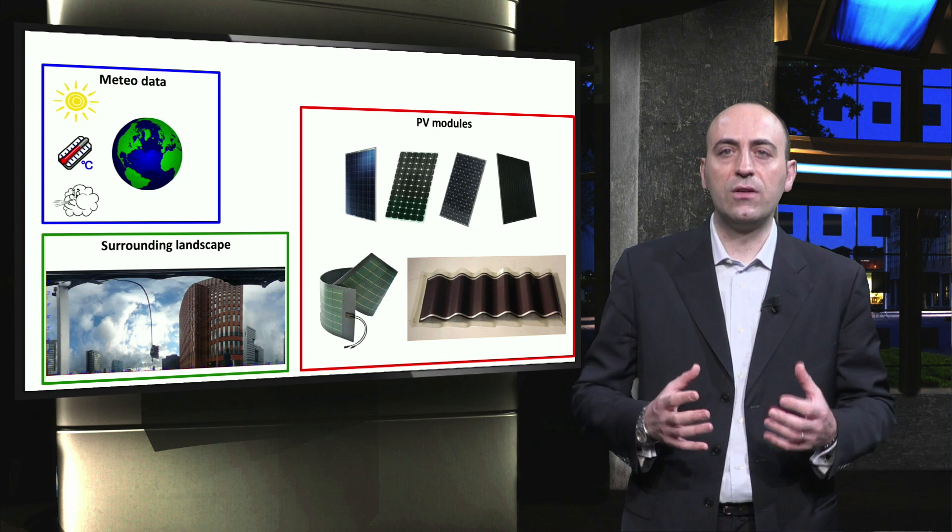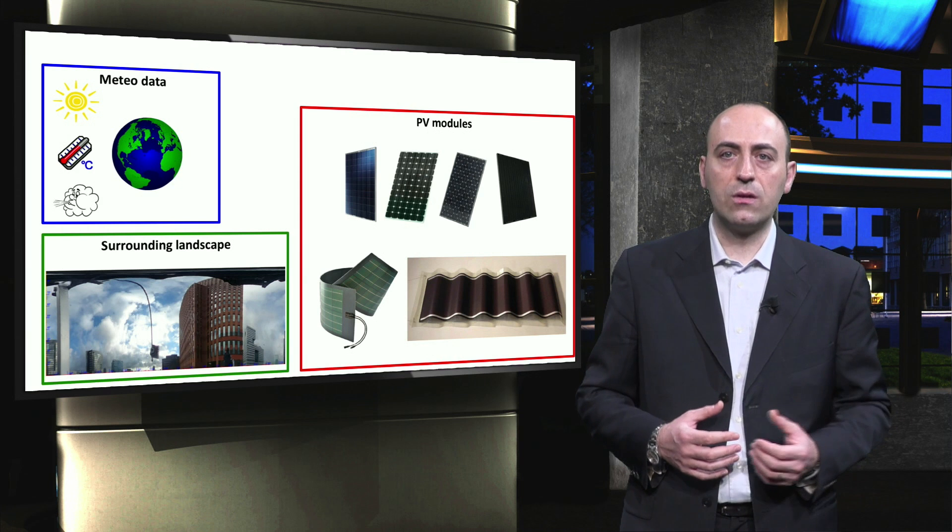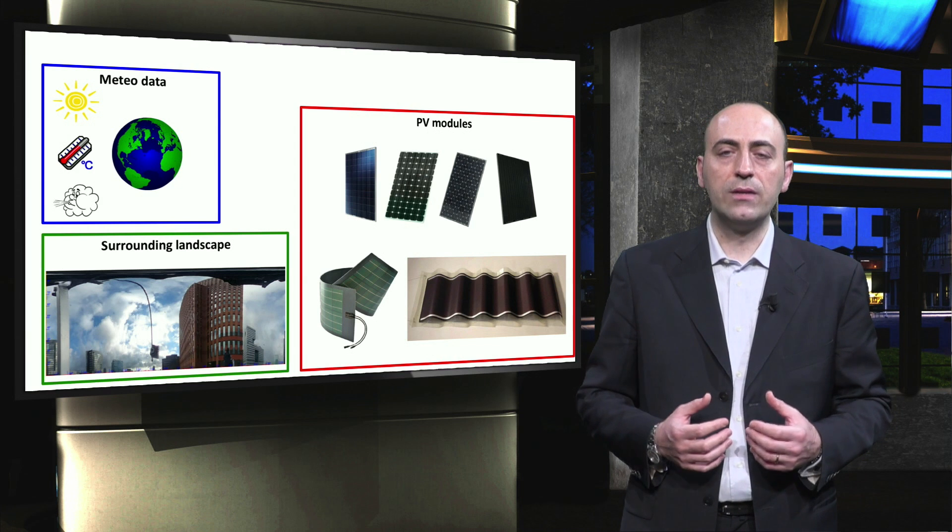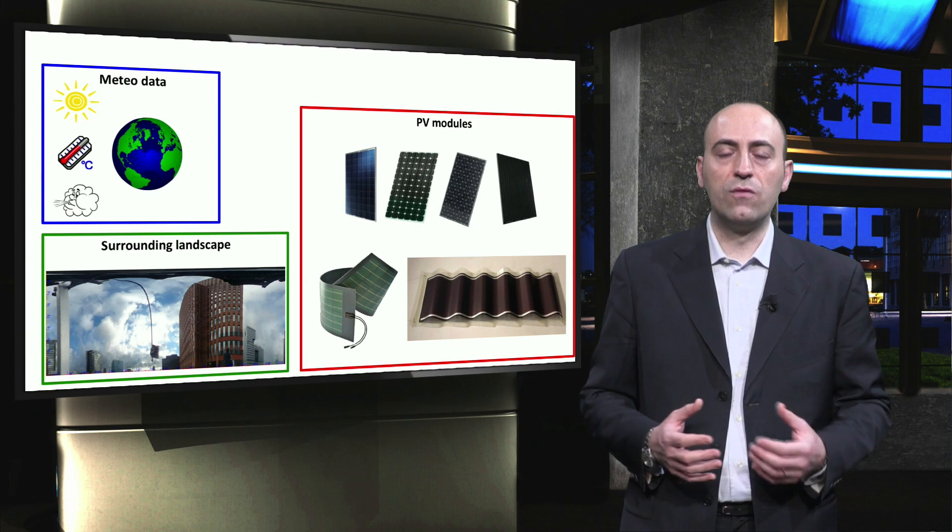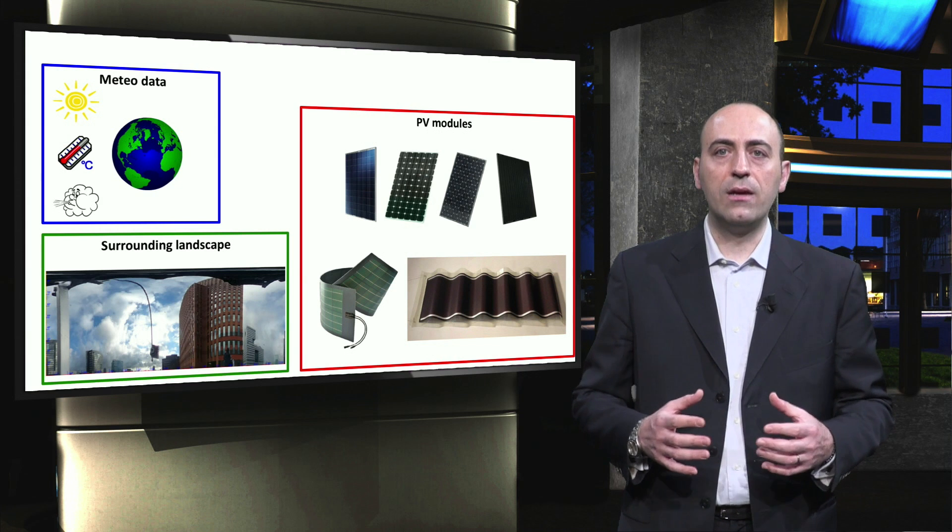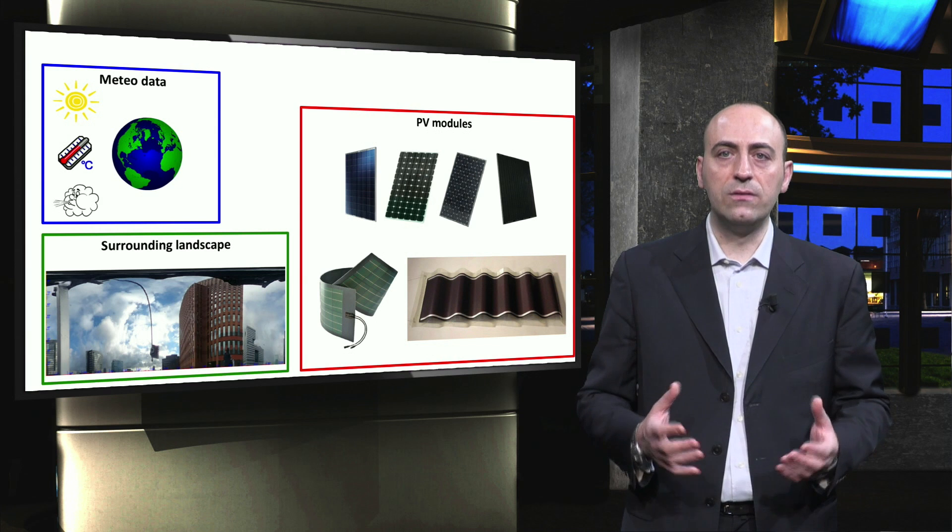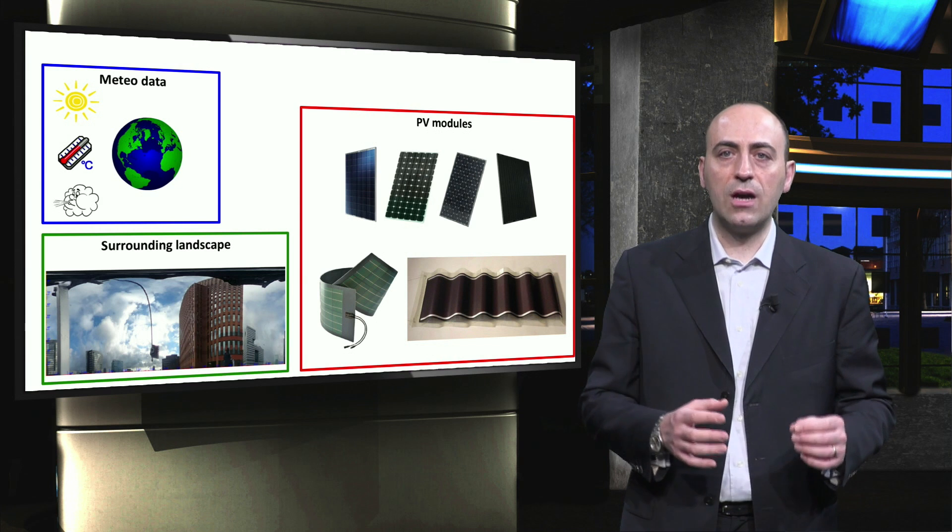Each PV module has different electrical properties such as open circuit voltage, short circuit current, and peak power. The modules can be connected in various ways to form a PV array. The manner in which the modules are interconnected determines the output voltage and current of the array.